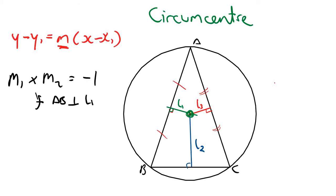We can do some maths to rearrange this. If two lines are perpendicular, then their slopes multiply together to give minus 1. So if AB and L1 are perpendicular, and we know the slope of AB — using the formula, difference in y's over difference in x's — then the slope of L1 will be minus the reciprocal of the slope of AB. So I know the slope of L1, and I know a point on L1 because it's the midpoint, so I can work out the equation of L1. I do the same for L2 or L3, then use simultaneous equations to work out the point of intersection, which is the circumcentre.